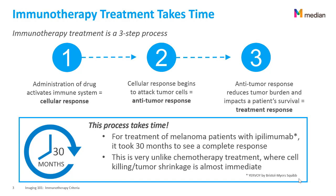Results with immunotherapy may take a lot more time than with traditional chemotherapy. The treatment is a three-step process. First, there is administration of a drug that will activate the immune system of the patient and start a cellular response. Second, the cellular response attacks the tumor cells, which is called the anti-tumor response. Finally, the anti-tumor response may reduce the tumor burden and therefore impact a patient's survival.